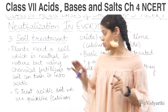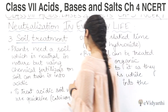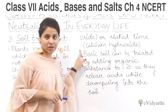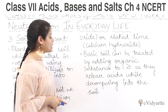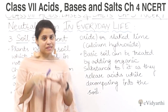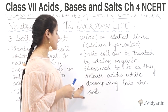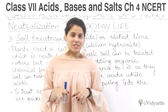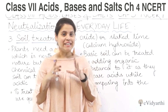To treat acidic soil, we use quicklime, which is basically calcium oxide, or slaked lime, which is calcium hydroxide. Basic soil can be treated by adding organic substances, as they release acids while decomposing into the soil. So this is our third example of neutralization in day-to-day life.